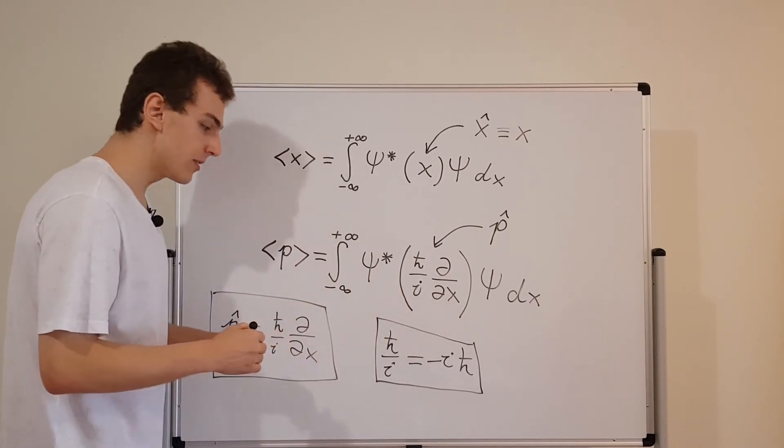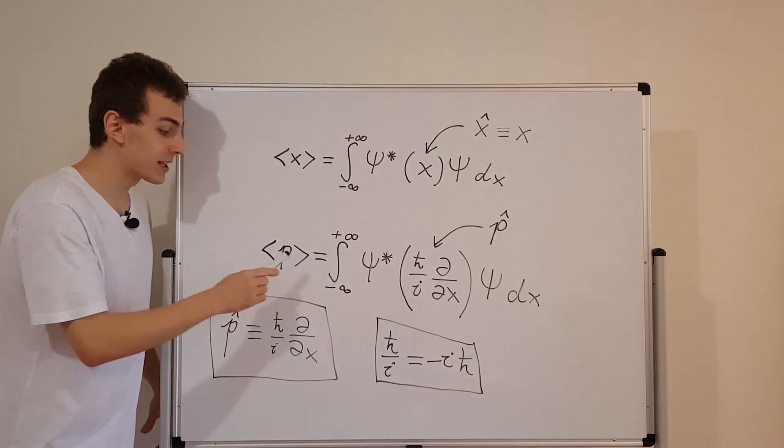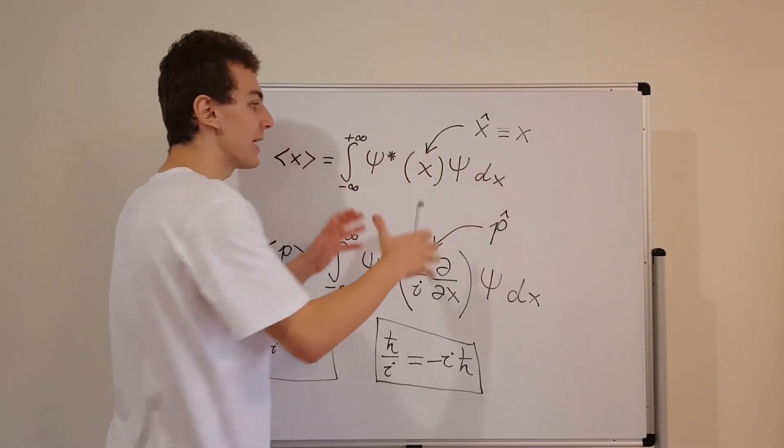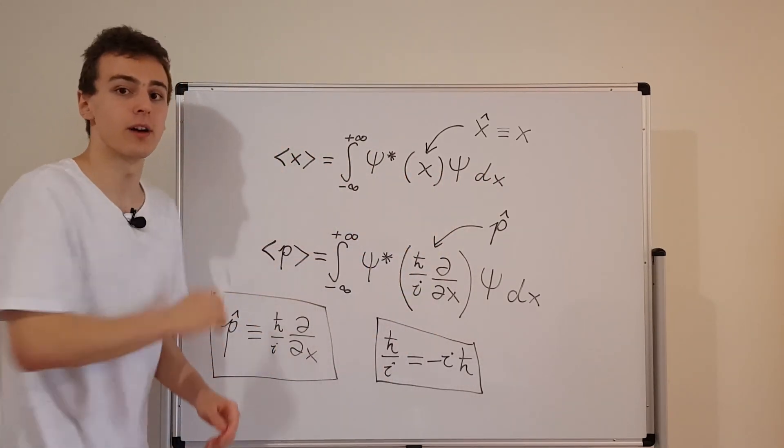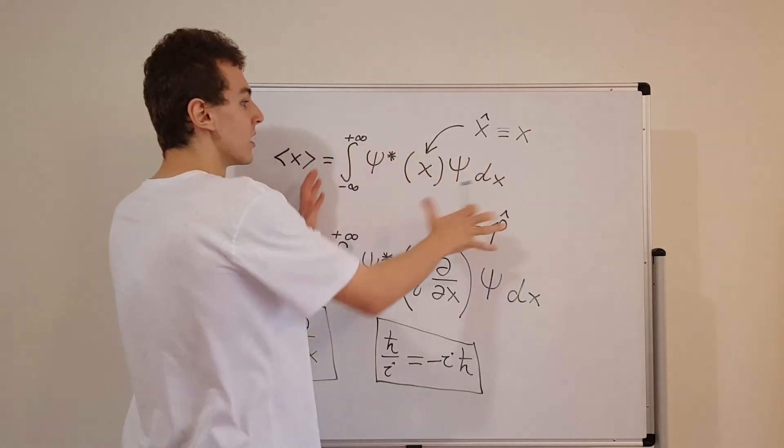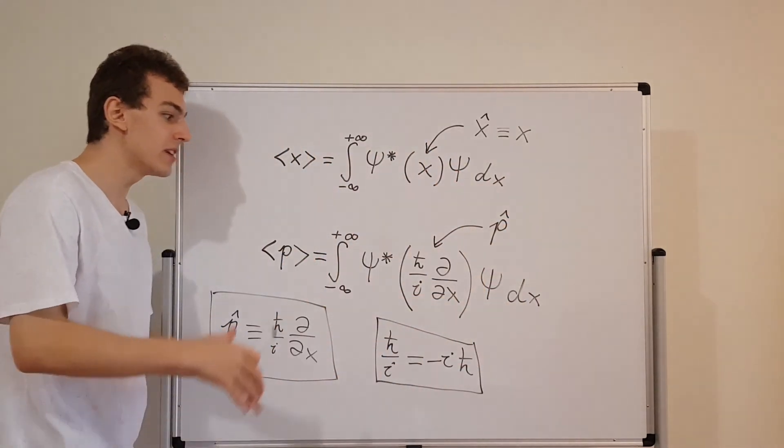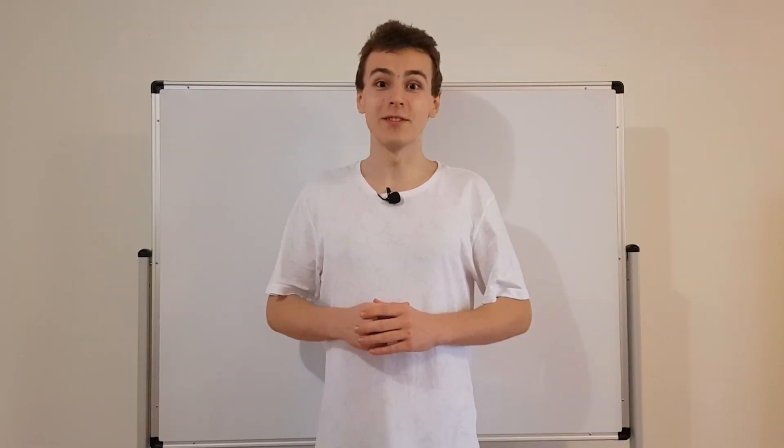So in this video, we discussed the expectation value of position and the expectation value of momentum. We saw that if you make an integral sandwich of the operator, that will give you the expectation value. So the result of this integral is a value. It's just a number. And that number gives you a sense of the average of a probability distribution. That's it for this video. You can find all the other videos in this quantum mechanics playlist if you click over here.